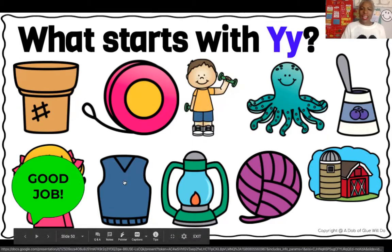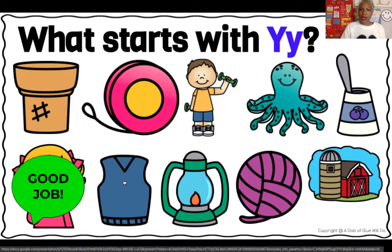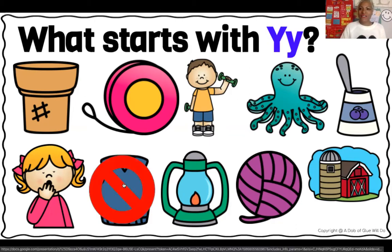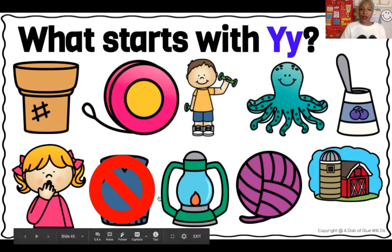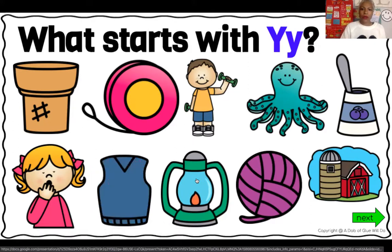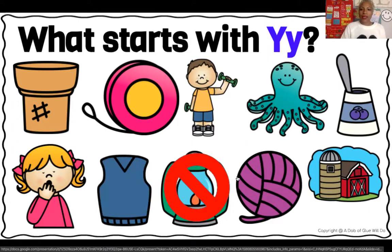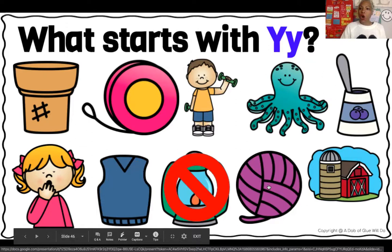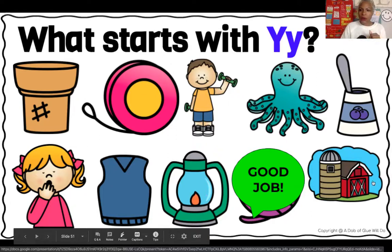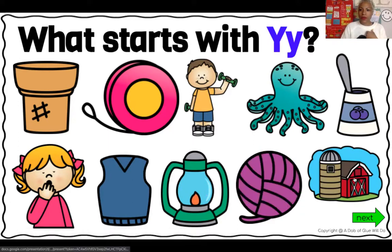Now what is our picture here? This looks like a vest. Vest. Vuh, vuh, vest. Is that a Y word? No, that's not a Y word — that's a V word. Now let's look at our next picture. Looks like a lantern. Is that a Y word? No. We have two more to go. What is this picture of? Yarn. Is that a Y word? Good job, good job. Our last picture, friends. Is that a Y word? It looks like a barn. Barn. Is that a Y word? No.